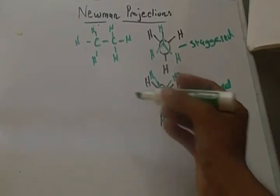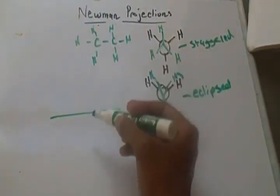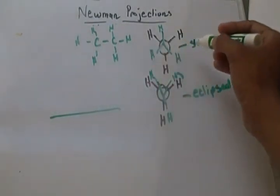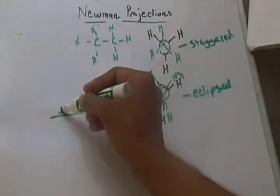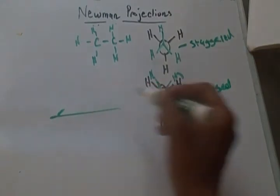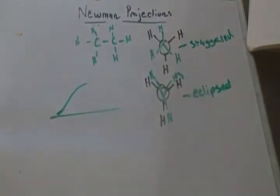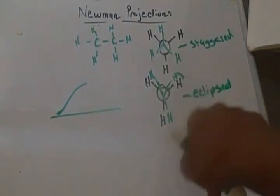That's why if you ever see an energy diagram, you may see at this staggered level it's at an energy minima. But then when it gets to an eclipsed state, it goes up to a maxima.